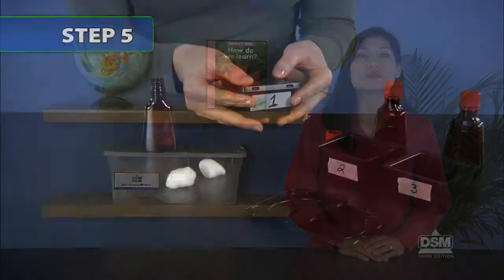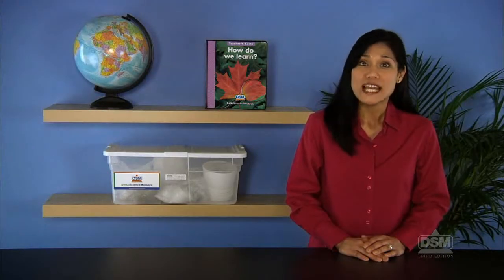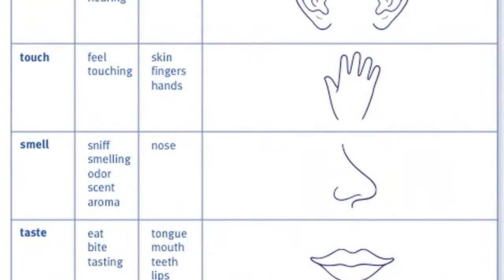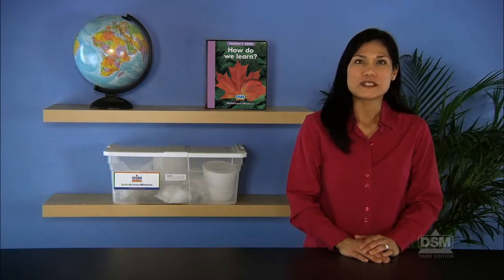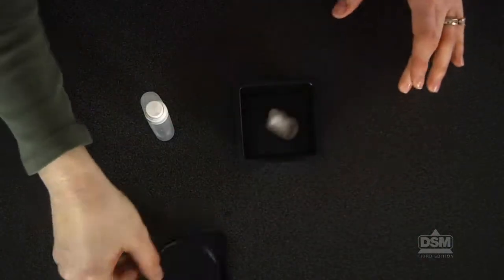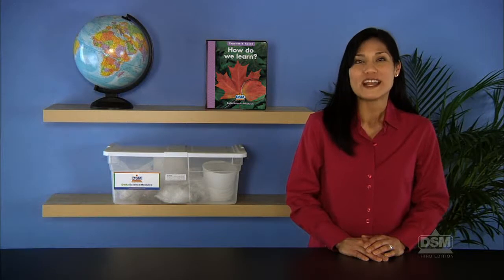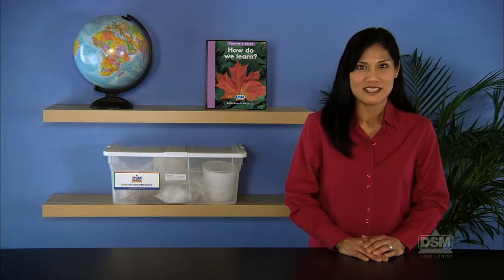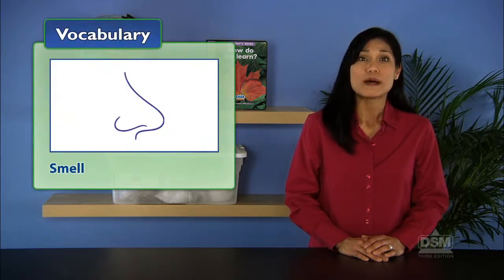To begin session two, distribute an odor box to each team and explain that they will not be able to see, hear, feel, or taste what's inside the box. Ask students how they can find out about what is inside. Students might respond that they can use their noses or sense of smell. Demonstrate the proper procedure for smelling a substance — waft the odor toward the nose with the hand rather than sniffing directly. Have students smell their boxes and share observations, then swap boxes so everyone has a chance to smell and identify all four scents. Emphasize that the sense of smell is one of the ways we learn about the world around us.